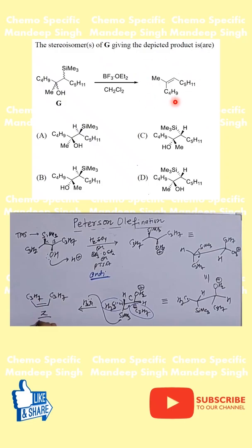So here what we have is this silyl alcohol, which under Lewis-acidic condition leads to the formation of Z-alkene. And we clearly know this is a perfect example of Peterson olefination. In fact, this is just a screenshot from one of my videos which I made on Peterson olefination. The link is in the description. Everything has been discussed in detail with very important examples. Please watch that video.